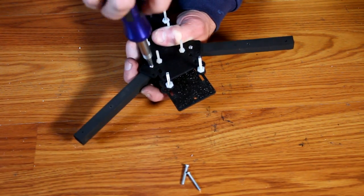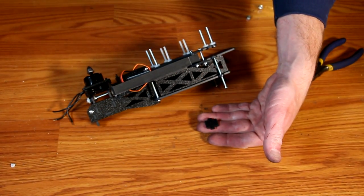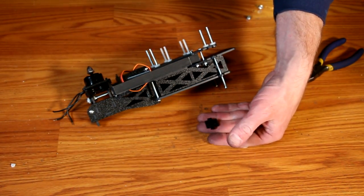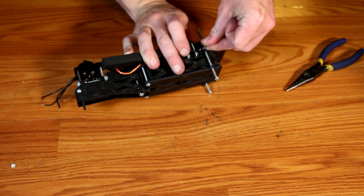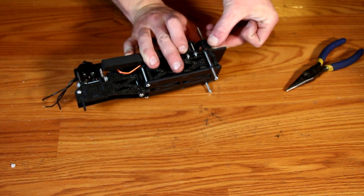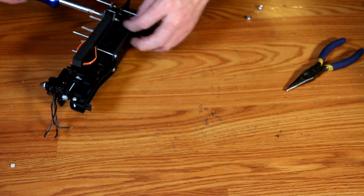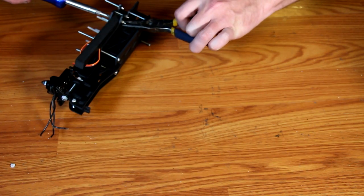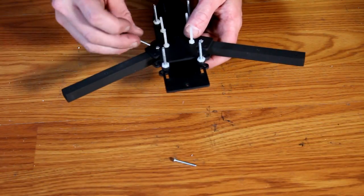Now we'll install the wire guides. You'll notice that one side of the wire guide is slightly longer than the other. The longer side goes towards the front of the aircraft. Once installed, now you can install the 4-40 stainless steel lock nuts to the bottom of the arm assembly.